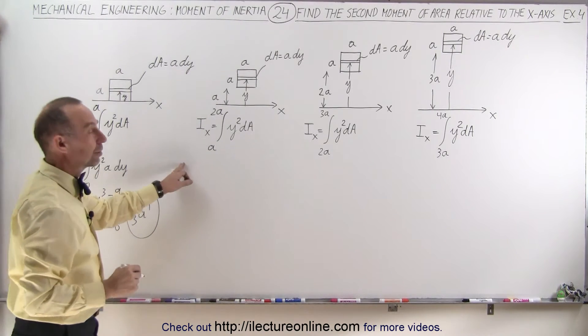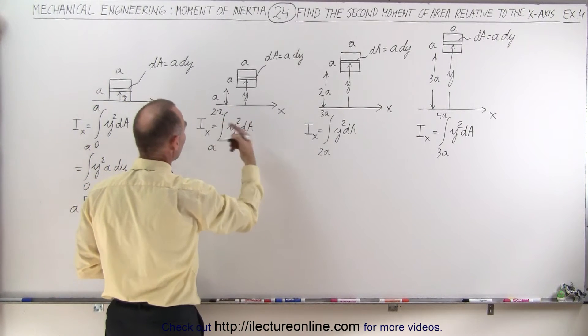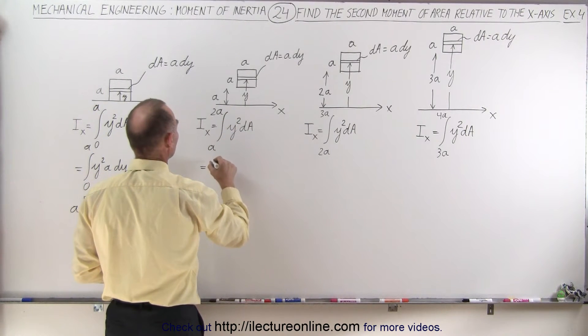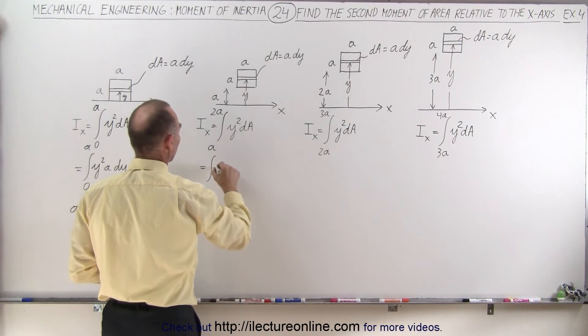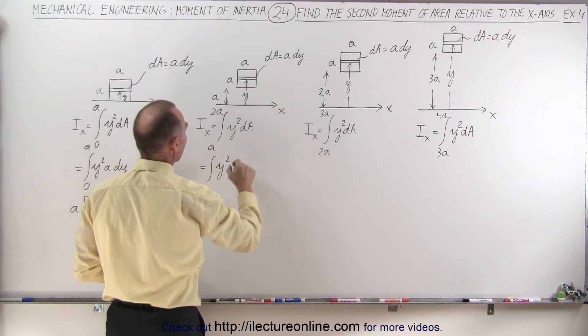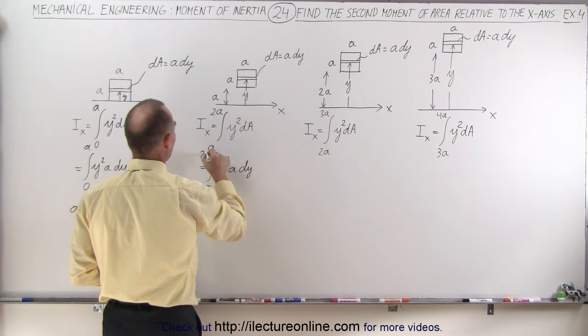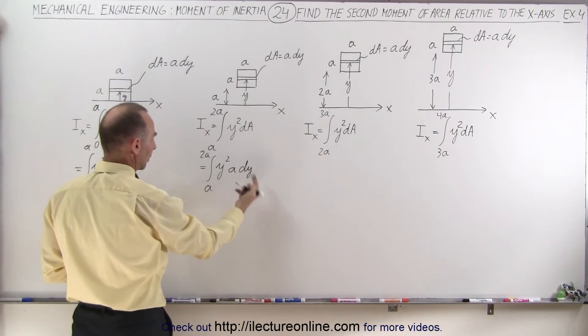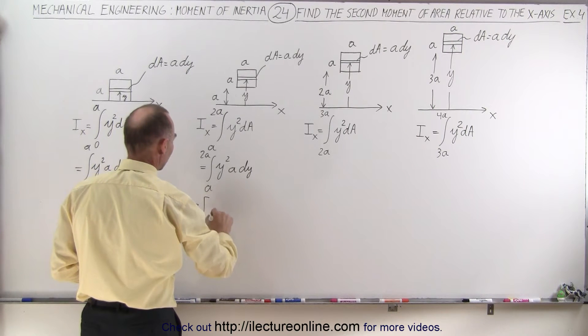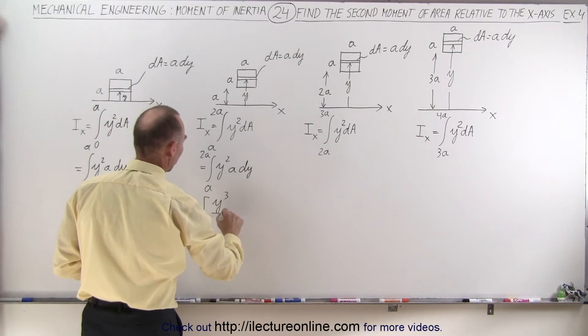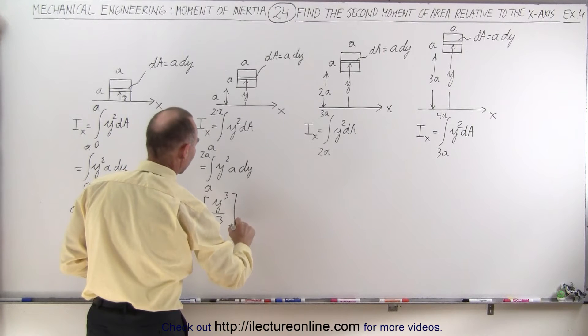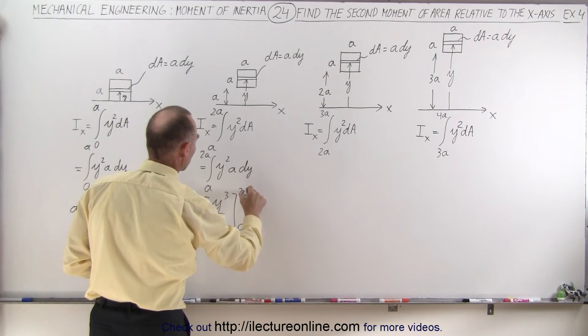On the next integral, I now integrate from a to 2a, but it's the same integral. So this is equal to the integral of y squared a dy from a to 2a. This becomes equal to, when I pull out the a, I get a times y cubed over 3, evaluated from a to 2a.